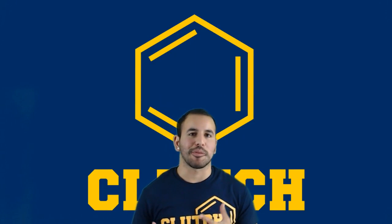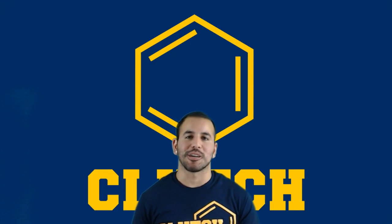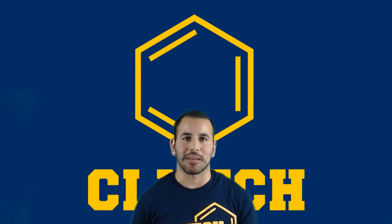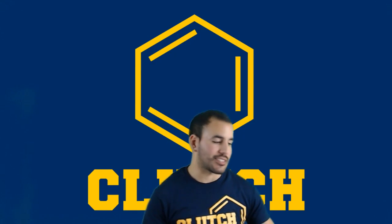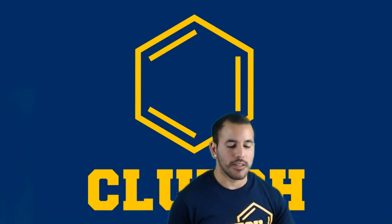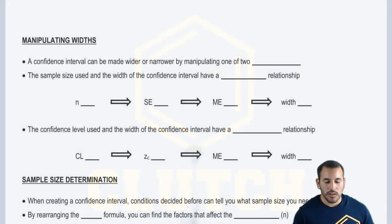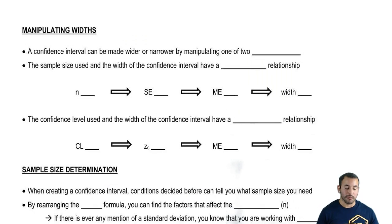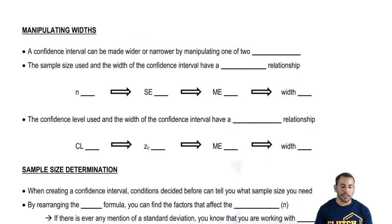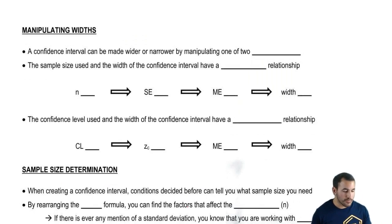Alright, so we're about to finish up all the concepts regarding sampling distributions. The last thing is sample size. First, let's talk about manipulating the width of the confidence interval. A confidence interval can be made wider or narrower by manipulating one of two variables.